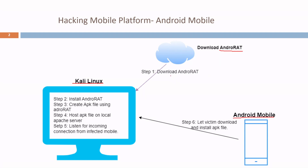First of all I have to download Android RAT, which is a remote administration tool for Android mobile, on my Kali machine. Once I have downloaded it I will create an APK file using the androidrat.py. After that, for the easiness of delivery of this APK file to the victim Android mobile phone, I will host an Apache web server on the Kali Linux and copy the APK file on the local Apache server.